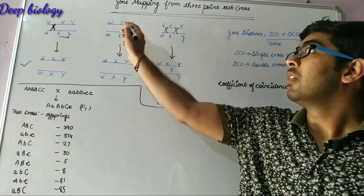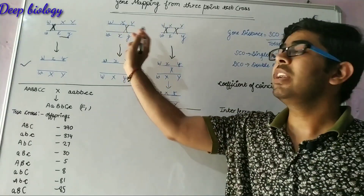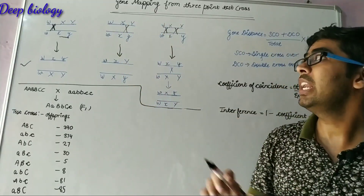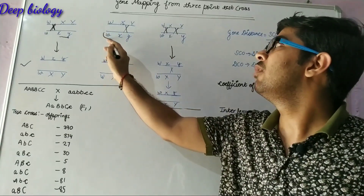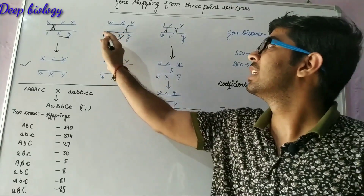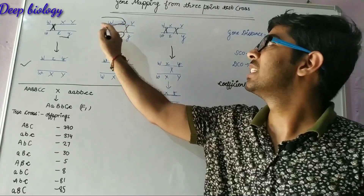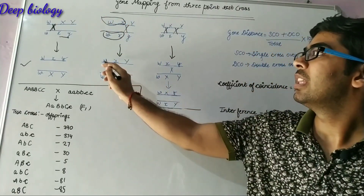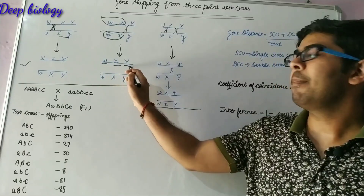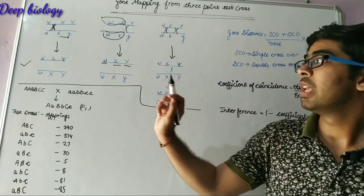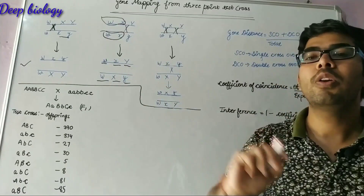When crossing over occurs between the X and Y region, there will be swapping of small w and small x with capital W and capital X. That's why we find small w, small x and capital Y, and capital W, capital X and small y.